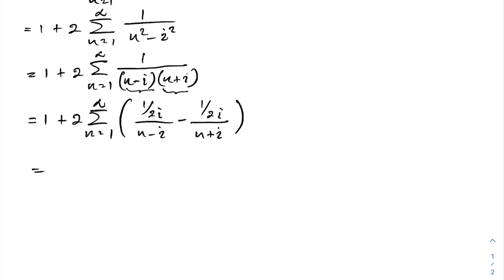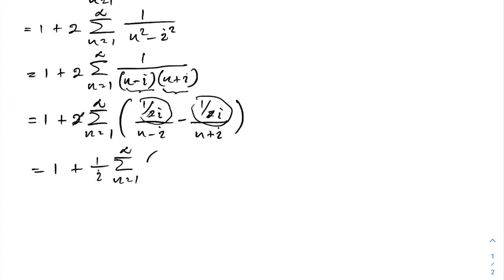The factors of 2 cancel throughout. We get 1 plus, and taking 1 over i as a common factor, the sum from n equals 1 to infinity of 1 over n minus i minus 1 over n plus i.